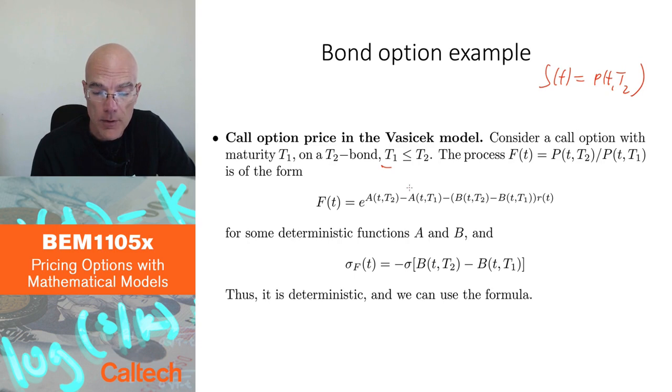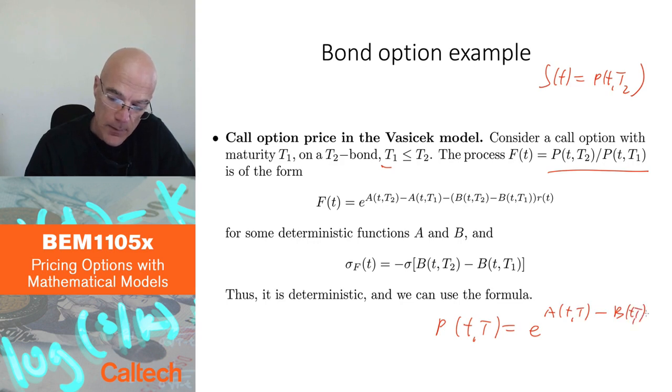If I want to use the previous slide, then I have to check whether this ratio, this ratio here, the ratio of the two bonds, the one on which I'm writing the option, P of T T2, over the numeraire bond, the one with the maturity of the option, which is T1. I want to see whether that has deterministic volatility. Now, I know that in affine models, which includes Vasicek, P of T capital T is e to the A(T,T) minus B of T T R of T, where A and B are deterministic. That's what we did in affine models.